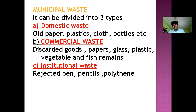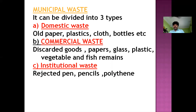Municipal waste can be divided into three types: domestic waste, commercial waste, and institutional waste. Domestic waste means the waste coming from our household sectors. Commercial waste means the waste coming from our trade sector. Institutional waste means the waste coming from schools and colleges.